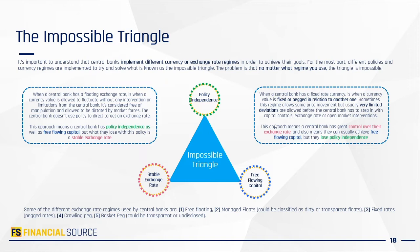That's one of the big challenges markets have with the Chinese yuan. Even though it's been allowed to strengthen this year, the key point is that it's been allowed to do so by the PBOC. They set the midpoint and decide how much it can depreciate or appreciate — so it's not really seen as a free-floating currency. Some see it as fixed; in my opinion, it's more like a dirty float.